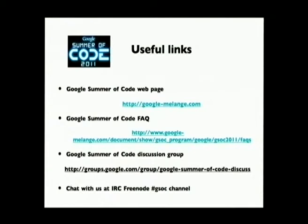Here are some useful links since we just announced the program, and we'd like you to spread the word. Google Melange is where we administer the whole program from — it's actually an open source effort created specifically to run the Summer of Code program, and there are a whole bunch of student developers who work on this project. There's also a FAQs page linked off of Google Melange. We have a discussion list that has gotten very popular in the last couple of days since we announced the program, and we also have an IRC channel on Freenode.